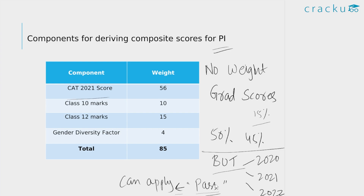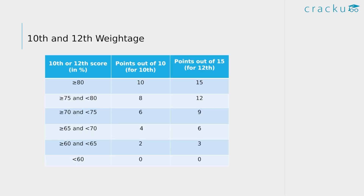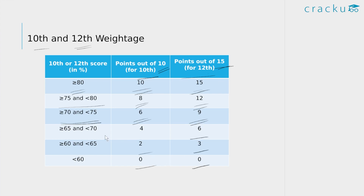Apart from that, the weightage given to other parameters remained the same. Your CAT score is given a weightage of 56, your Class 10 marks are given a weightage of 10, your Class 12 marks are given a weightage of 15, and a weightage of 4 is given to the gender diversity factor, adding up to a total of 85. If you scored more than 80 percent in your 10th and 12th, you will be awarded all 10 points and all 15 points respectively. If your score in 10th is between 75 and 80, you get 8 out of 10, and 12 out of 15 for 12th. If your score is between 70 and 75, you get 6 out of 10 for 10th and 9 out of 15 for 12th.